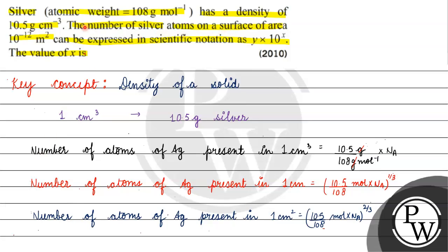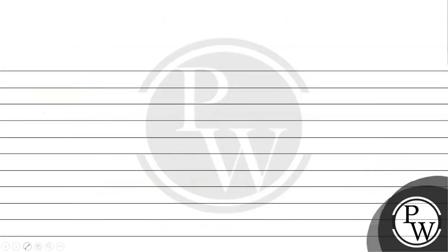Now, we have to find the number of silver atoms on a given area. What is the area? It is 10 raised to the power minus 12 meter square. If we convert meter square to centimeter square, we multiply by 100 into 100, so it becomes 10 raised to the power minus 8 centimeter square.